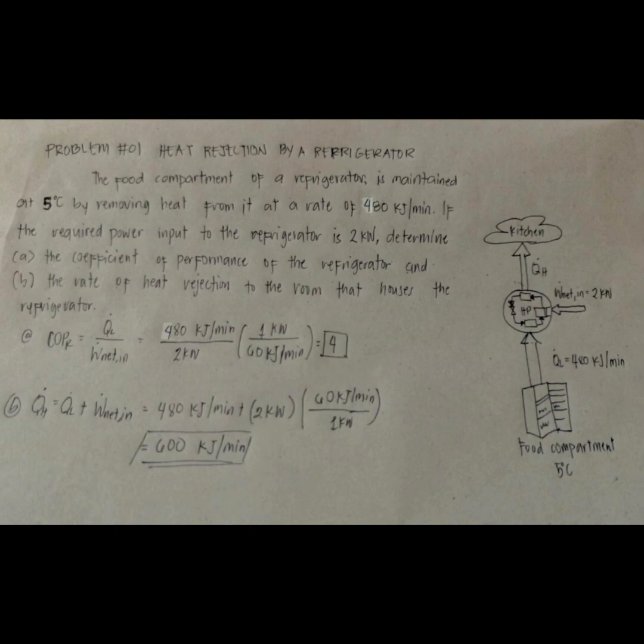This equals 480 kilojoules per minute plus 2 kilowatts multiplied by 60 kilojoules per minute over 1 kilowatt, so we have 600 kilojoules per minute. Both the energy removed from the refrigerated space as heat and the energy supplied to the refrigerator as electrical work eventually show up in the room air.